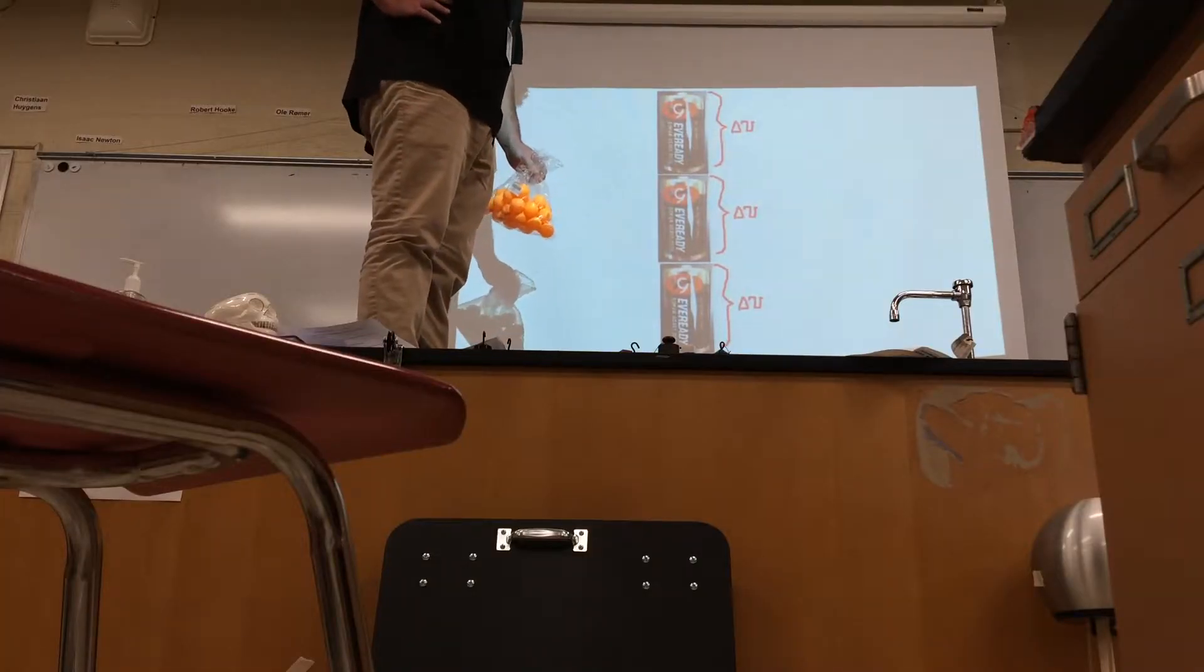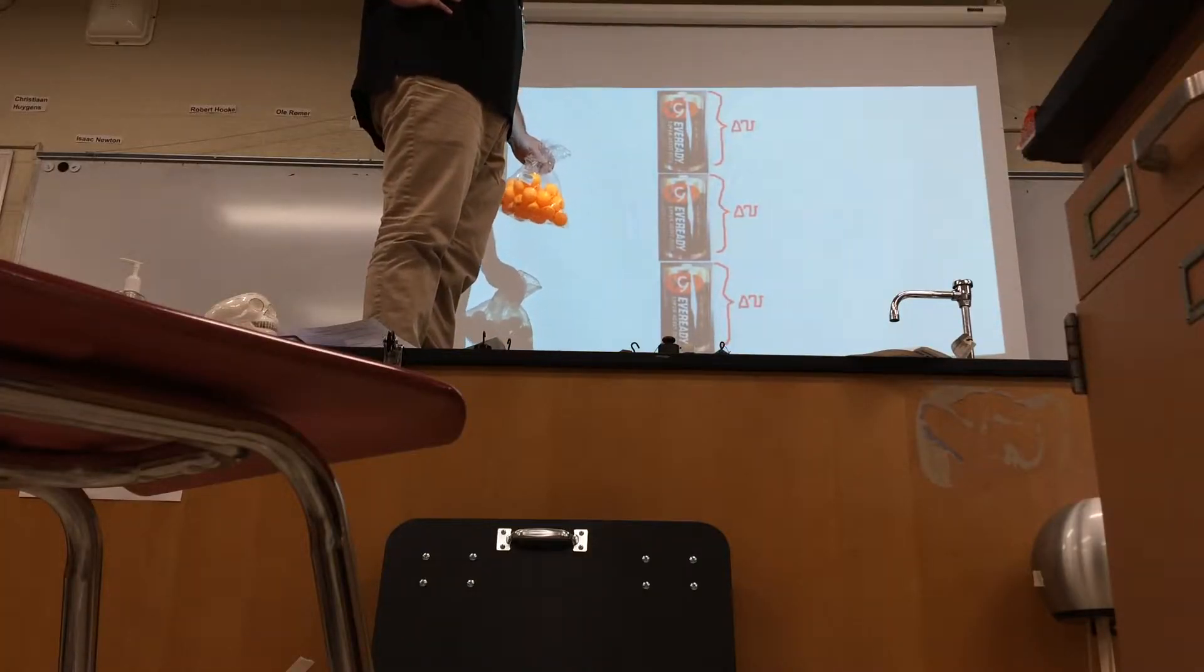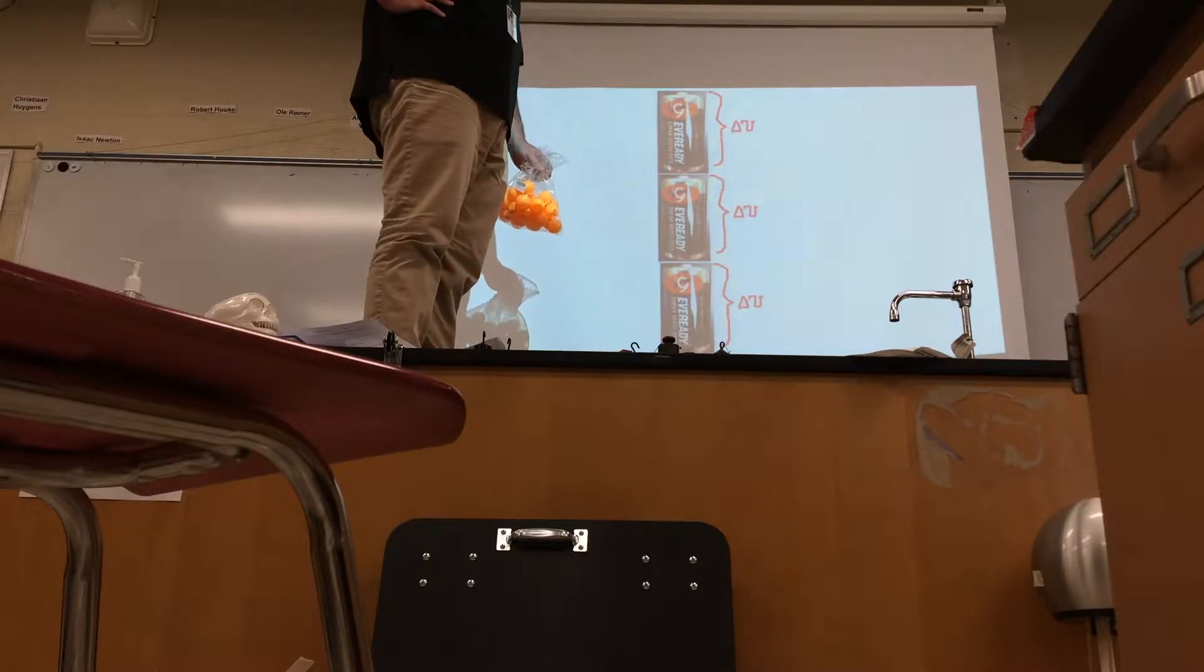Here I've got four D cells which have a voltage of 1.5 volts each. So how does this represent more potential energy for charges, and therefore charges going around the circuit with more energy?